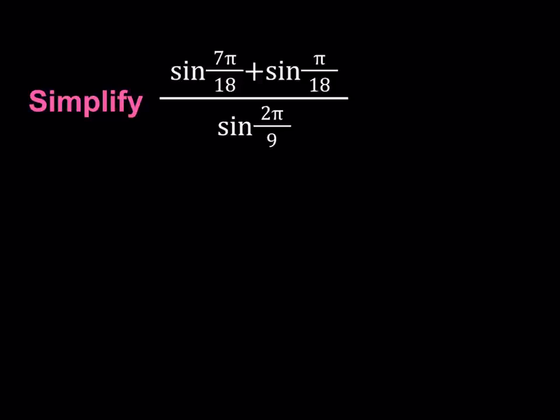So pi radians is equivalent to 180 degrees, so this is going to be sine of 70 degrees. Plus π/18, 180 divided by 18 is 10...